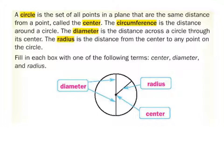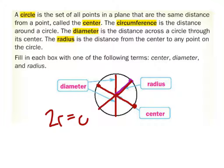The diameter is just any line that goes from one point of the circle through the center and to its opposite point on the circle, as you can see with the example shown here in the book. We can determine that if we wanted a diameter, it's simply the radius plus another radius — so it would be two radii equals a diameter.